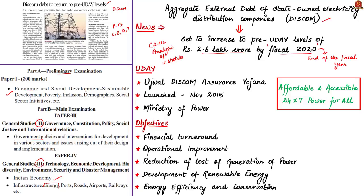In the context of this news article, let us know in brief about the UDAY policy. UDAY is the acronym for Ujwal Discom Assurance Yojana. This scheme was launched in November 2015 and is administered by the Ministry of Power. The aim of UDAY is to provide affordable and accessible 24x7 power to all. The main objectives are to improve state-owned power generation and distribution companies by focusing on financial turnaround, operational improvement, reduction of cost of power generation, development of renewable energy, and energy efficiency and conservation.